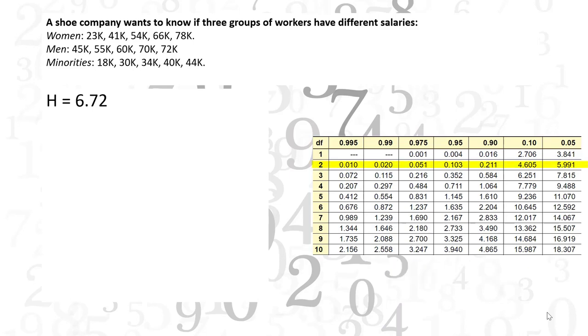We have three groups, so that's 2 degrees of freedom and an alpha level of 0.05.